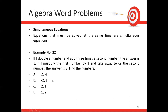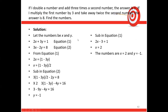Simultaneous Equation Word Problem: Example 22 — If double a number plus 3 times a second number equals 1, and 3 times the first minus twice the second equals 8, find the numbers. Equations: 2x + 3y = 1 and 3x − 2y = 8. Solving gives x = 2 and y = −1.